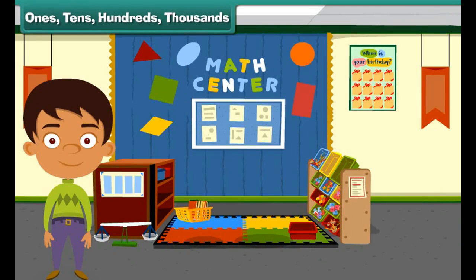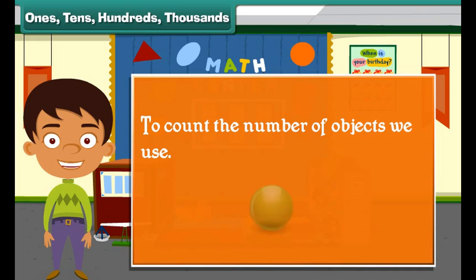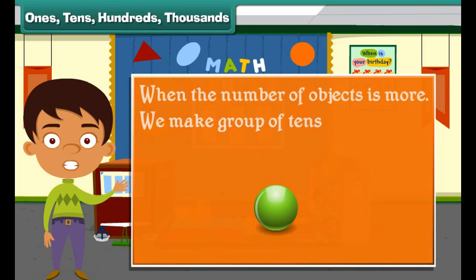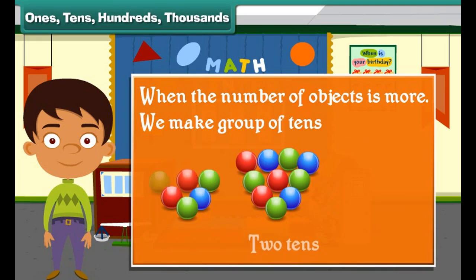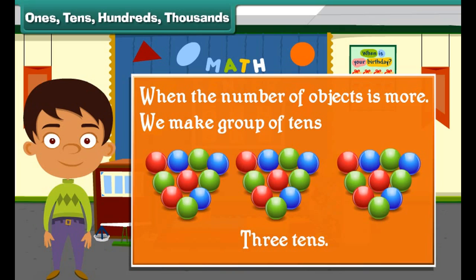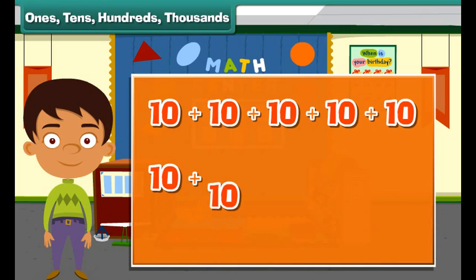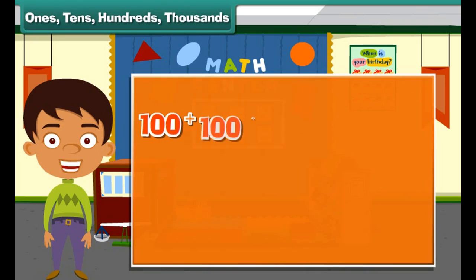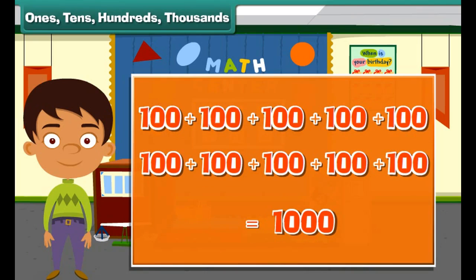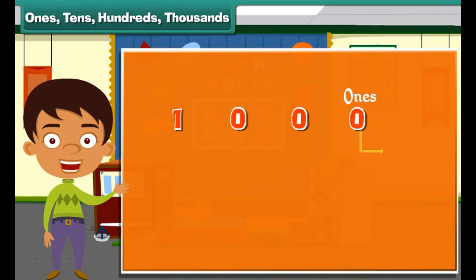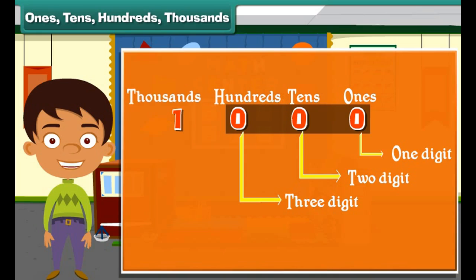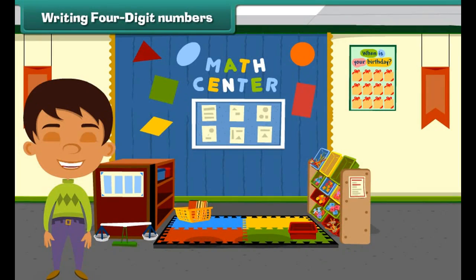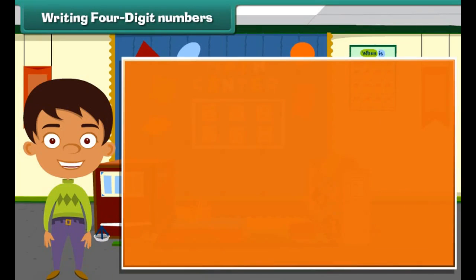To count the number of objects, we use ones. When the number of objects is more, we make groups of tens and count them as one ten, two tens, three tens. When there are lots of tens, we make a group of ten tens and call it hundreds. When we have ten hundreds, we call it a thousand. Observe that in ones we have one digit, in tens we have two digits, in hundreds we have three digits, and in thousands we have four digits.